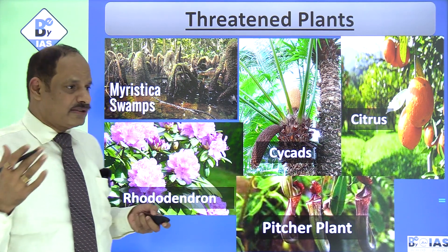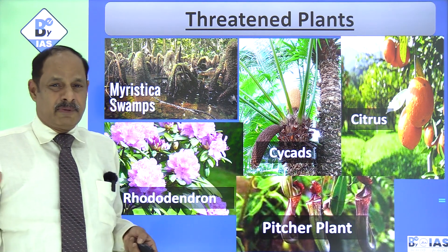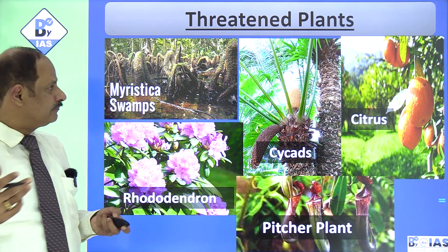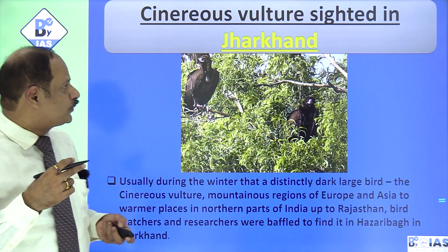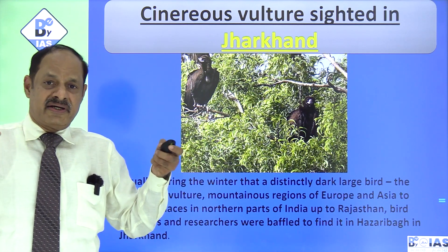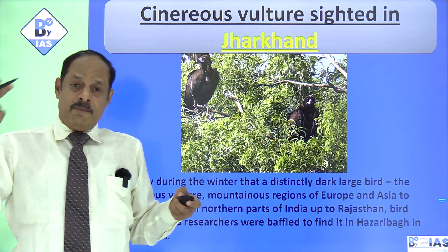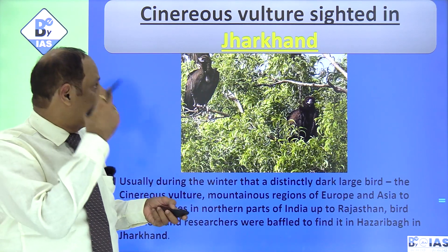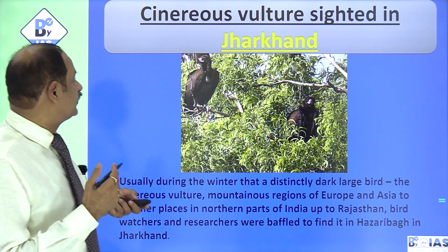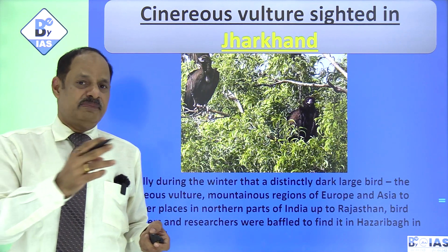Similarly, there are also threatened plant species which are shortlisted and equally important. These include Amristhika swamps, Artocarpus, citrus fruits — about which there have been many articles in The Hindu and Indian Express — the pitcher plant, and the rhododendron. The Cinereous vulture is normally seen only in northern areas particularly in Rajasthan, coming all the way from Europe and Asia, but scientists were baffled this year to identify this species for the first time in Jharkhand. Remember it has been seen in Jharkhand as well.